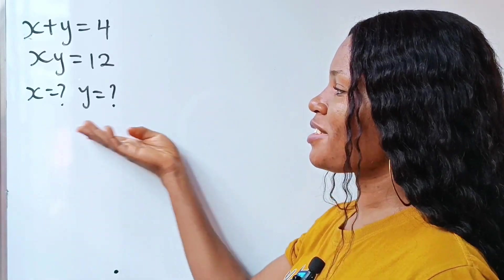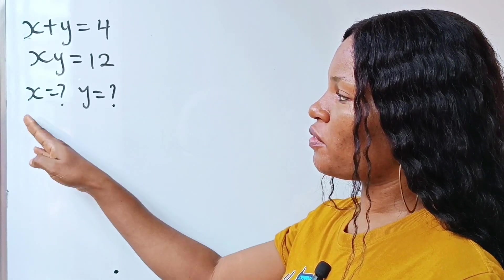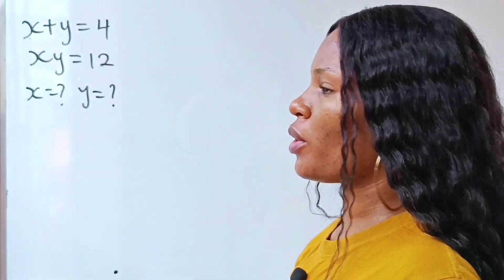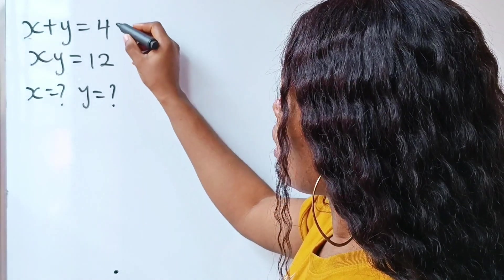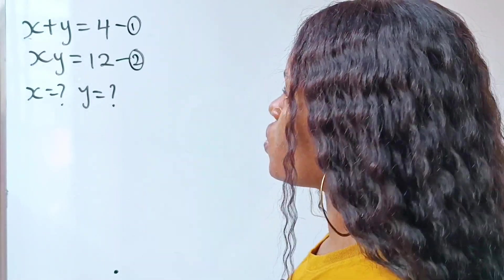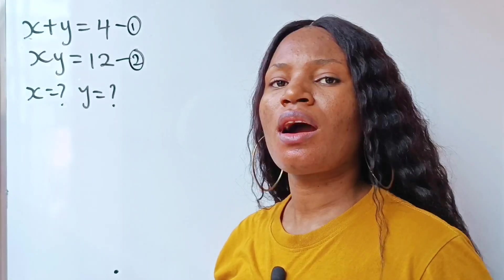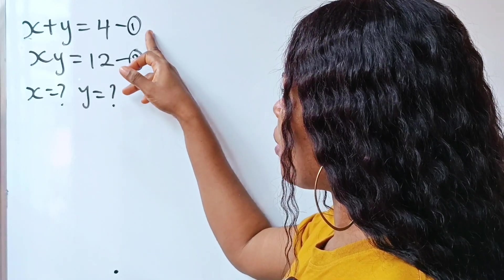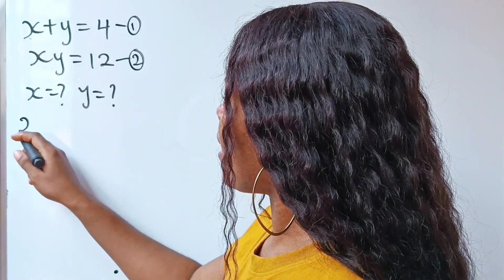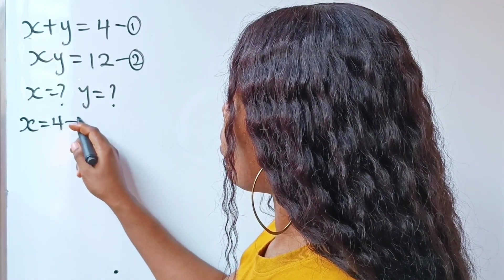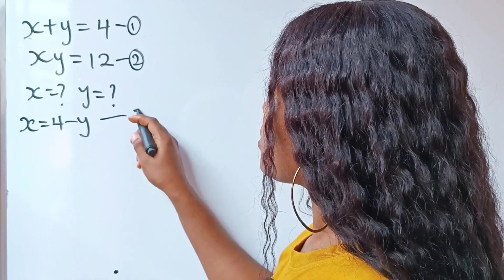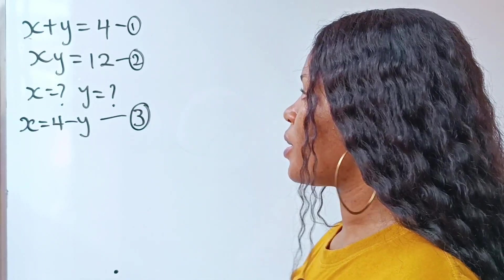Let's quickly solve for the value of x and y. If equation 1 is this and equation 2 is this. First, from equation 1, we can say that x is equal to 4 minus y. So let's call this equation 3.